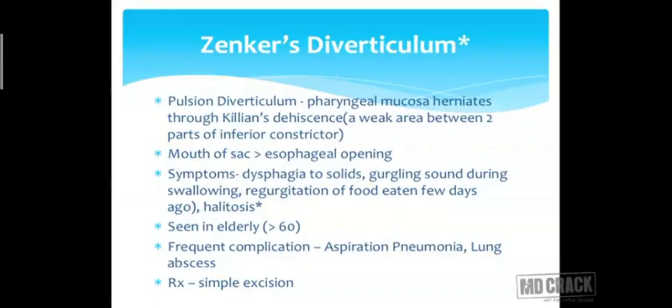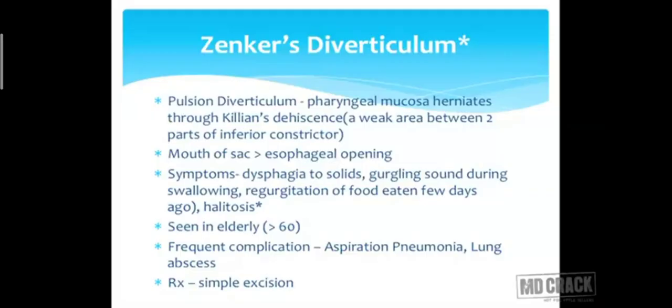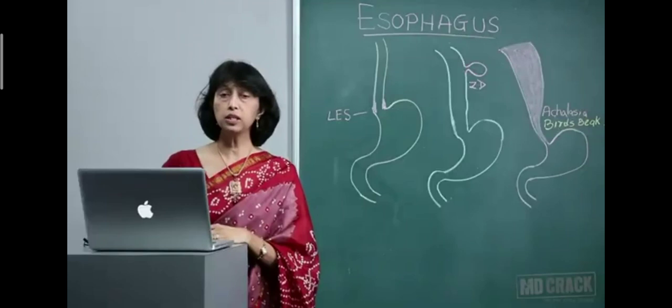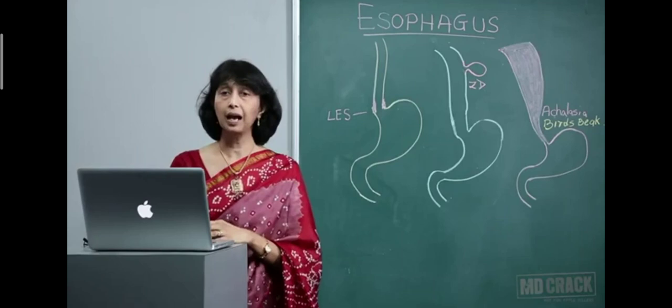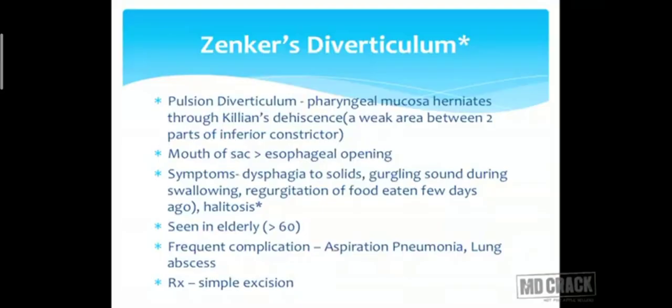Zenker's diverticulum is a pulsion diverticulum, often asked in MCQs. At Killian's dehiscence — where the pharyngeal mucosa meets the esophageal mucosa — this is a weak area near the inferior sphincter. The pharyngeal mucosa herniates here, forming a pseudo-diverticulum containing only mucosa and submucosa — not the full esophageal wall. Food collects in this outpouching instead of going into the stomach, causing dysphagia, gurgling sounds audible to others, regurgitation of old food, and halitosis.